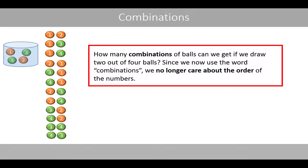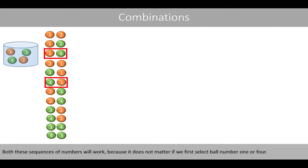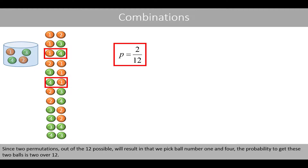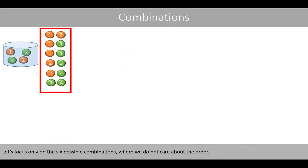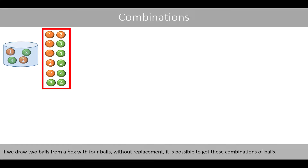How many combinations of balls can we get if we draw 2 out of 4 balls? Since we now use the word combinations, we no longer care about the order of the numbers. For example, what is the chance to select ball number 1 and 4 if we do not care about the order? Both sequences — drawing 1 then 4, or 4 then 1 — will work. Since 2 permutations out of the 12 possible result in picking ball number 1 and 4, the probability is 2 over 12. If we draw 2 balls from a box with 4 balls without replacement, it is possible to get 6 combinations.